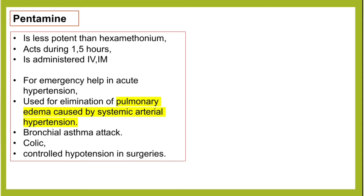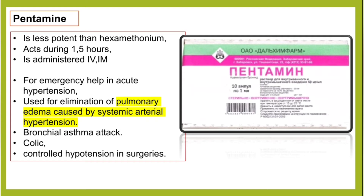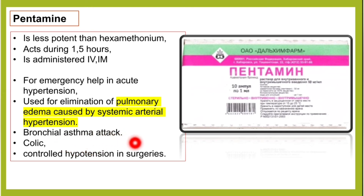The next drug is pentamine. Pentamine is less potent than hexamethonium. It acts for one and a half hours and is administered via IV or intramuscular injection. It is used for emergency help in acute hypertension and for elimination of pulmonary edema caused by systemic arterial hypertension — a frequent exam question. It is also used in bronchial asthma attack, colic, and controlled hypertension in surgeries.